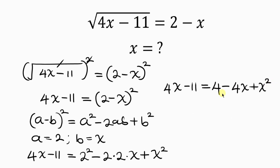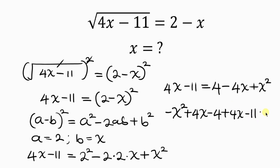Our next step will be to move what we have on the left-hand side to the right-hand side. Moving x squared to the left gives minus x squared. Moving negative 4x to the left gives plus 4x. Moving 4 to the left gives minus 4. We already have 4x and negative 11 on the left. This equals 0. Simplifying: we have negative x squared, and adding like terms, 4x plus 4x is 8x, and negative 4 minus 11 gives negative 15. So: negative x squared plus 8x minus 15 equals 0.